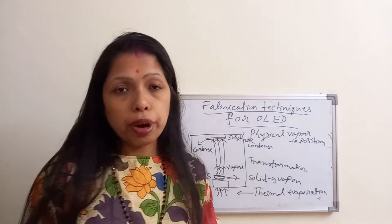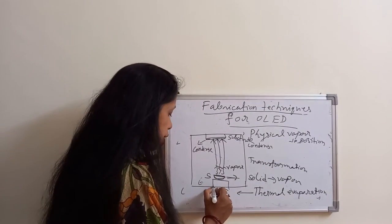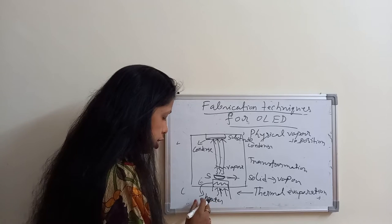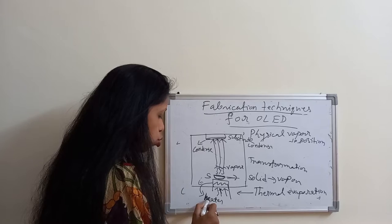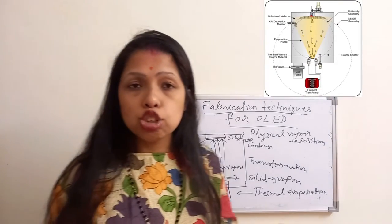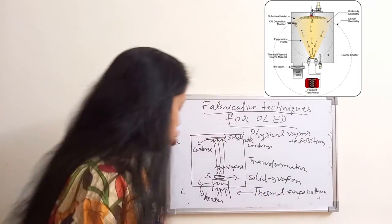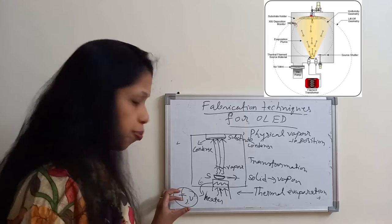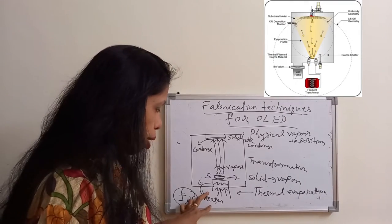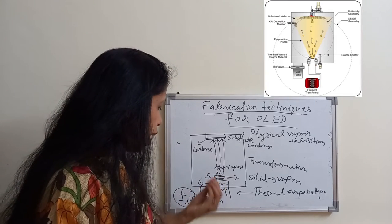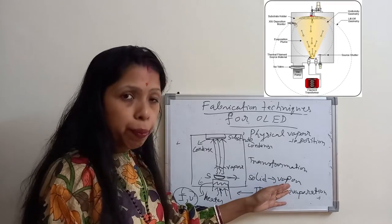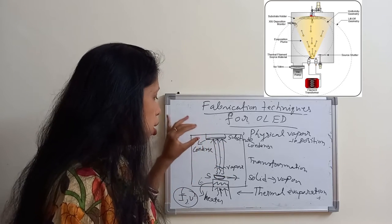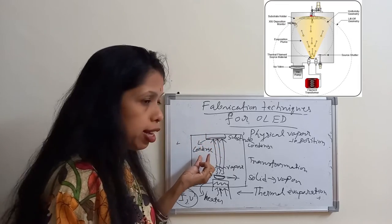To apply thermal energy, we place one heater. A current is applied into the heater, which produces thermal energy. The voltage or current controls the heater — if we change the voltage and current, the heater warms up. The source gets heat energy from the heater and converts into vapor phase. The vapor is then transferred towards the substrate and condenses into a thin film.